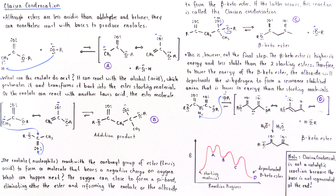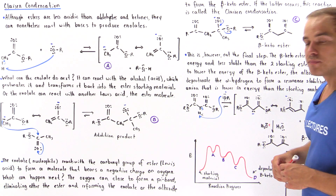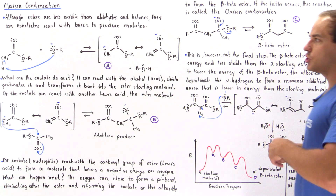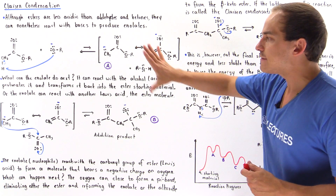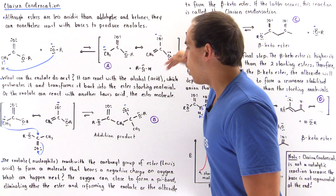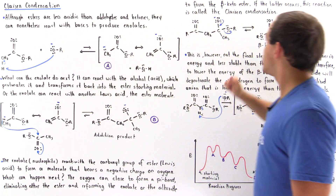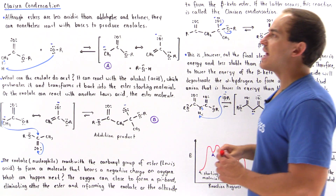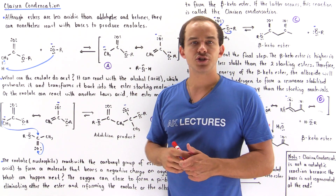That base was all converted into alcohol. In the final step, step five, the resonance-stabilized anion, intermediate D, is protonated with hydronium in the presence of water at the alpha-carbon to form the final product: the beta-ketoester. This five-step reaction mechanism — steps one through five — is known as the Claisen condensation.